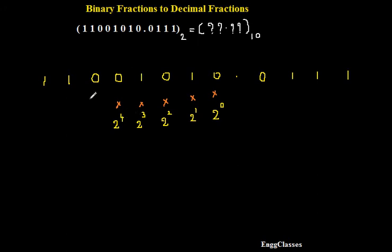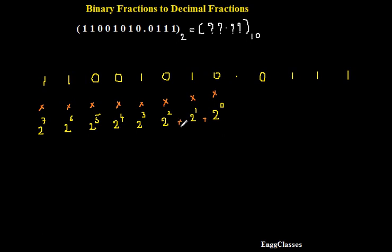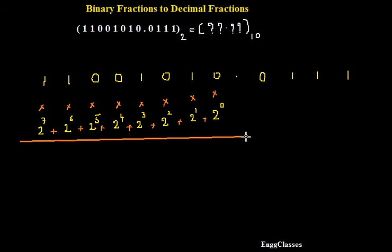Next, I'll consider this digit and multiply it with 2 to the power 4. Similarly, moving further, this digit with 2 to the power 5, the next digit with 2 to the power 6, and the last digit with 2 to the power 7. Now I need to evaluate each of these and then sum them all up to get the equivalent decimal number. Let me put a straight line so we can understand it much better.